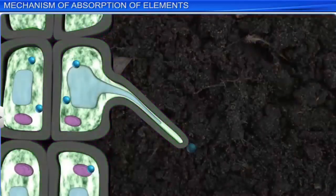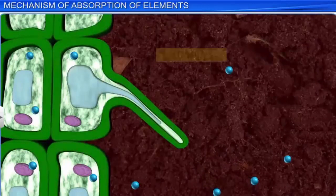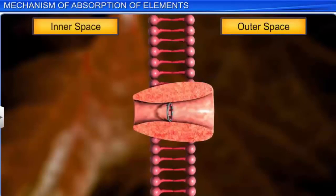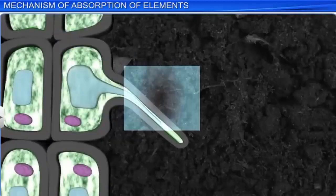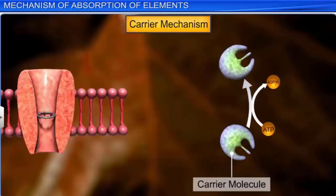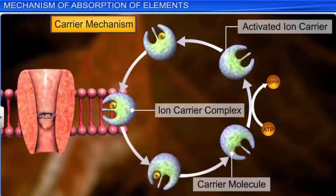The second phase involves the entry or exit of ions to and from the symplast. This requires the expenditure of metabolic energy, and hence it is an active process. The movement of ions from the outer space of the cell to the inner space is generally against the concentration gradient and hence requires energy. This happens through the carrier mechanism. The carrier gets activated by the expenditure of energy from the ATP molecule. The activated carrier molecule binds with the ions and transfers it into the cell. The movement of ions is called flux. The inward movement into the cells is called influx, and the outward movement is called efflux.